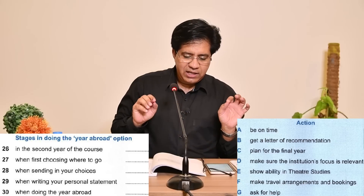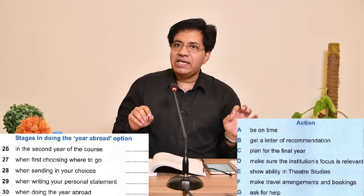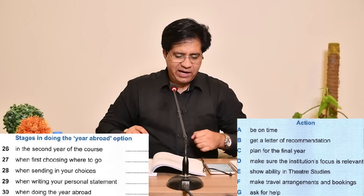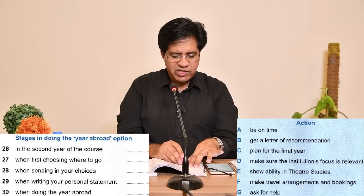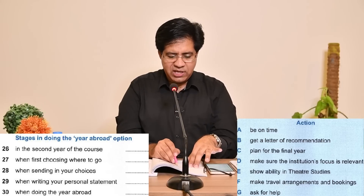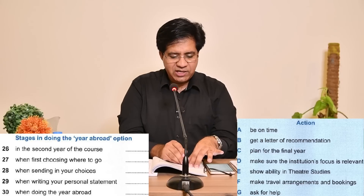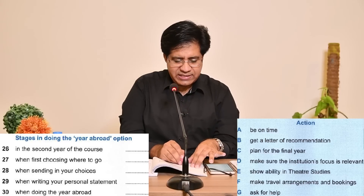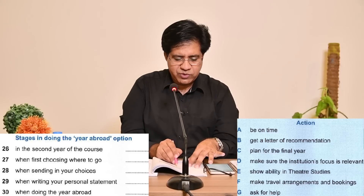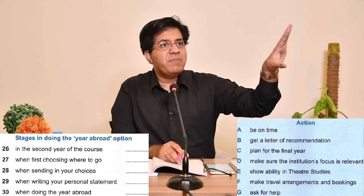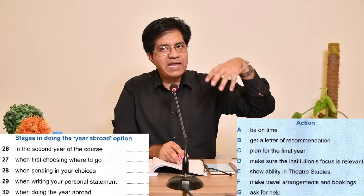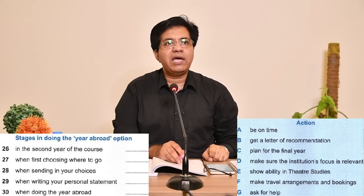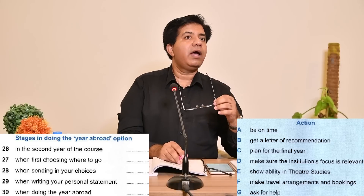The actions are given in options A, B, C, D, E, F, G, and the questions are 26, 27, and so on. These are stages in doing the year abroad option — for example, second year of the course, choosing where to go. There isn't much information in the stages themselves, so the action options are more important. Let me tell you how they are going to talk about it.